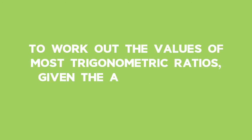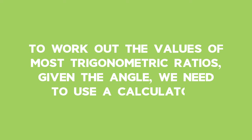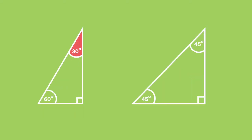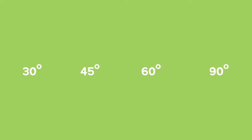To work out the values of most trigonometric ratios given the angle, we need to use a calculator. However, there are some special angles where the ratios are simple to remember. These angles can easily be worked out without using a calculator, as they produce simple ratios. These angles are 30 degrees, 45 degrees, 60 degrees, and 90 degrees, and any multiple of those.